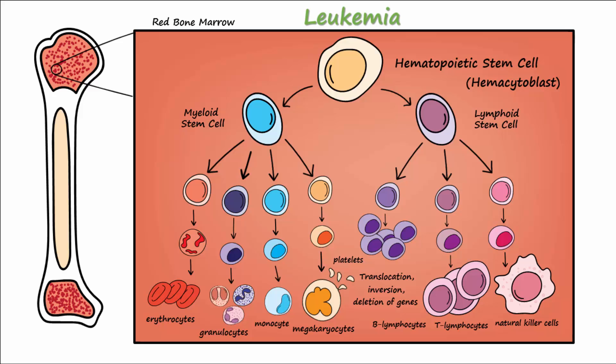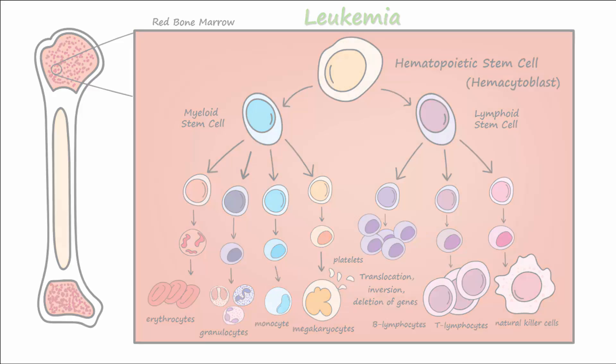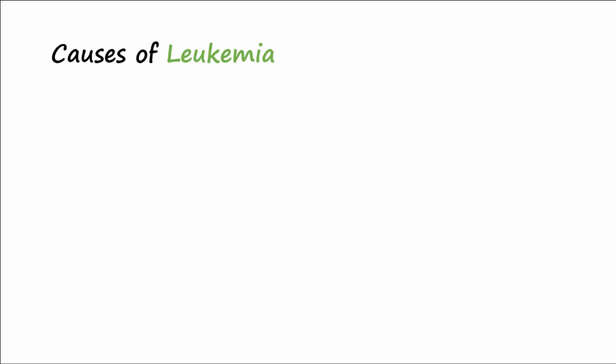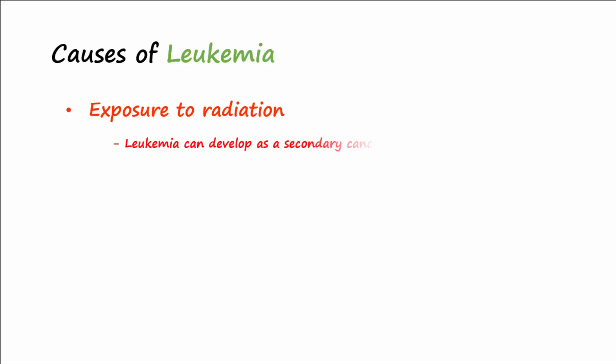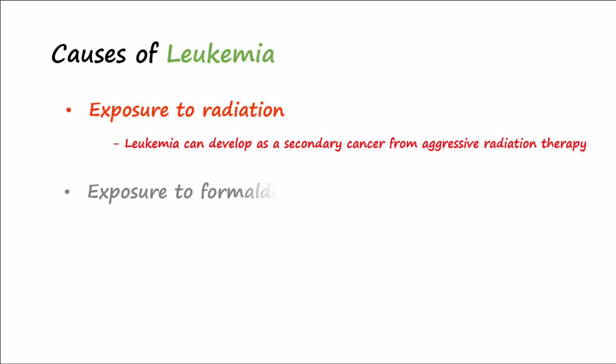Leukemia comes about when high levels of blast cells, or less differentiated cells, appear in the blood. There are several factors known to incite the genetic abnormalities observed in leukemia. These include exposure to both medical and non-medical forms of radiation, which explains how leukemia can sometimes develop as a secondary cancer after aggressive radiation therapy in the treatment of an unrelated cancer.